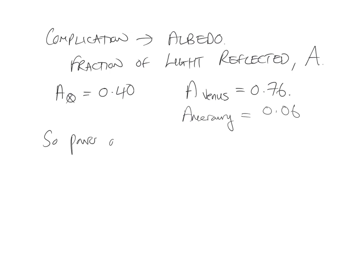So the power absorbed by the planet, we have to account for this albedo, is going to be radius of the sun squared, σ Stefan-Boltzmann, temperature of the sun to the fourth power, divided by d² times the cross-sectional area of the planet, and then it's 1 minus the albedo, because this is the absorbed stuff.